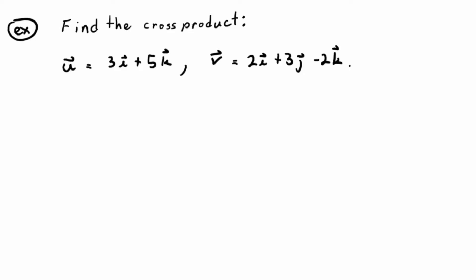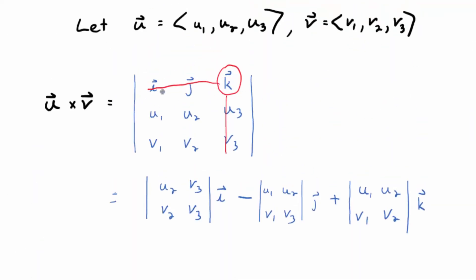So the first thing you want to do is set up that 3 by 3 determinant looking thing. Use the proper notation, u cross v. Set up the 3 by 3, it's like a matrix except the first row is vectors, not scalars. The first row never changes. It's always i, j, k.